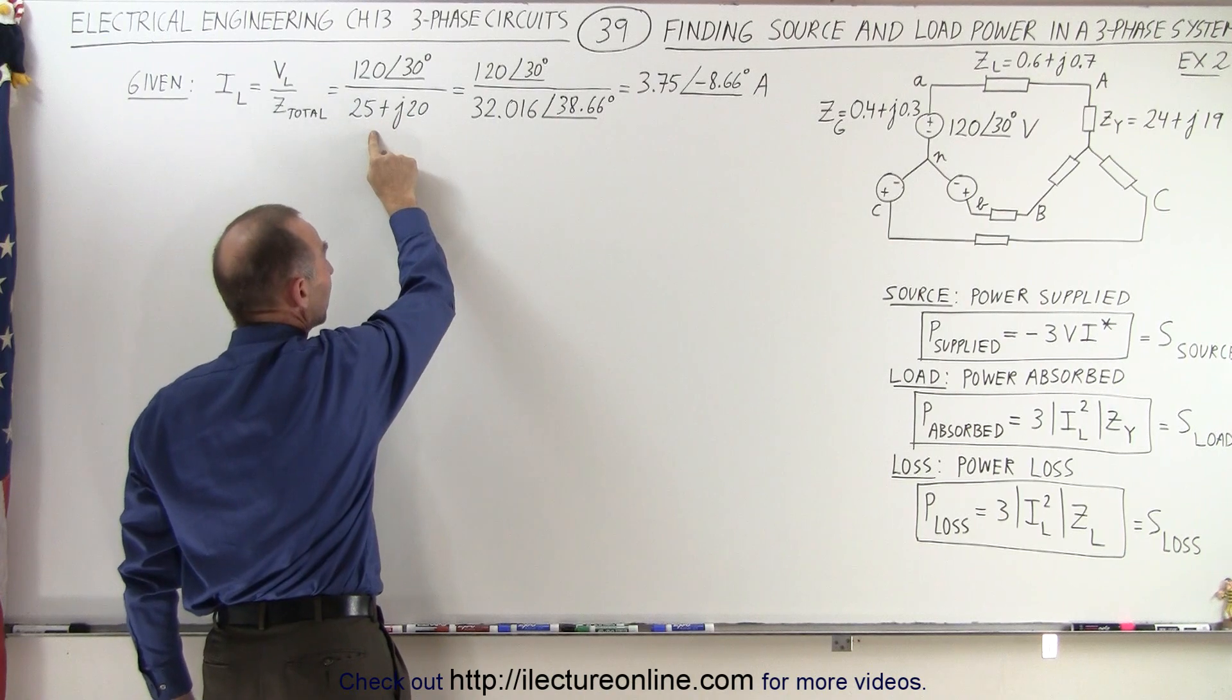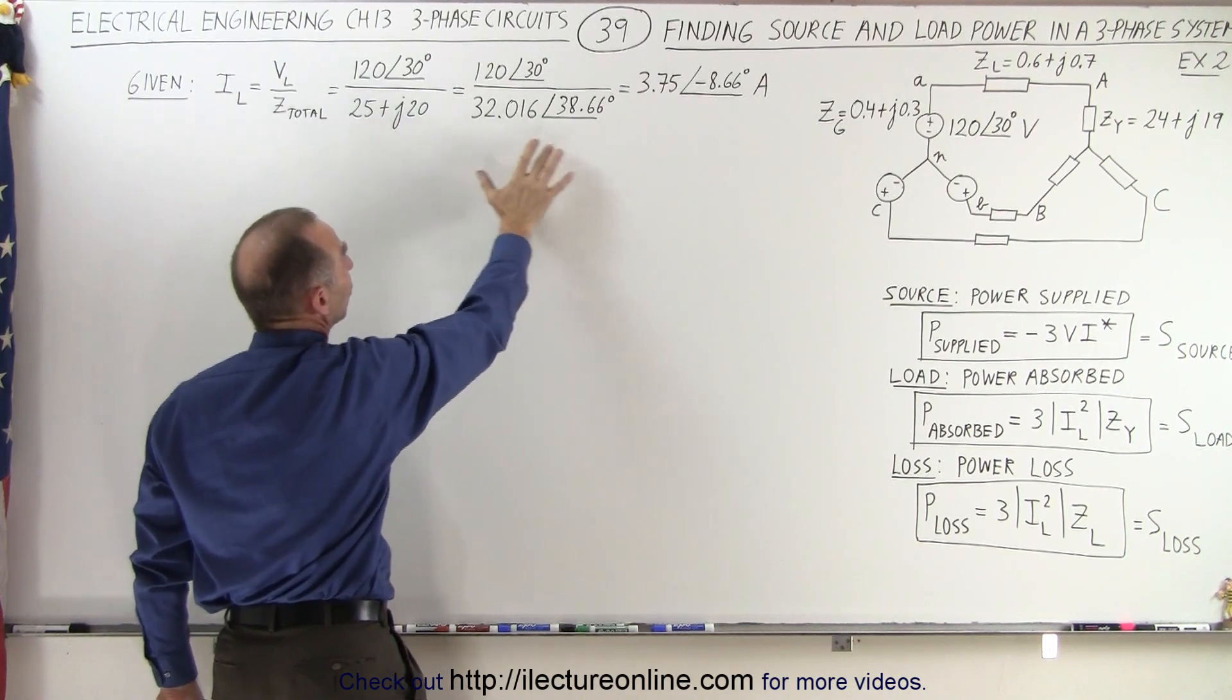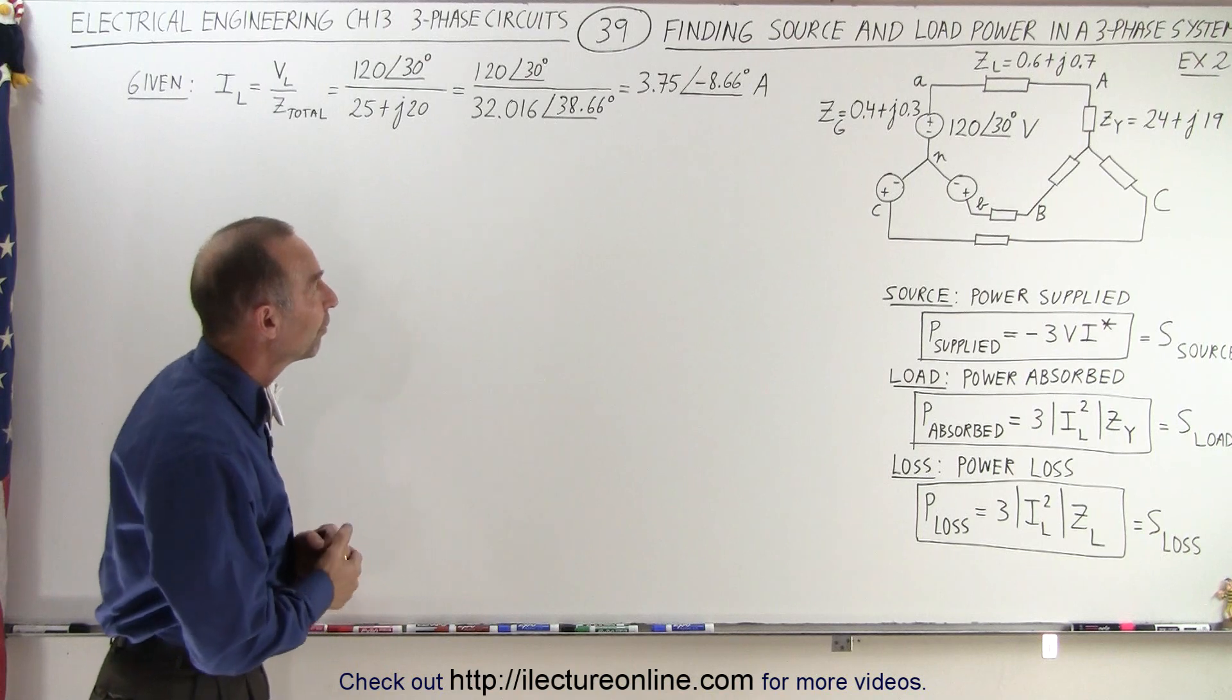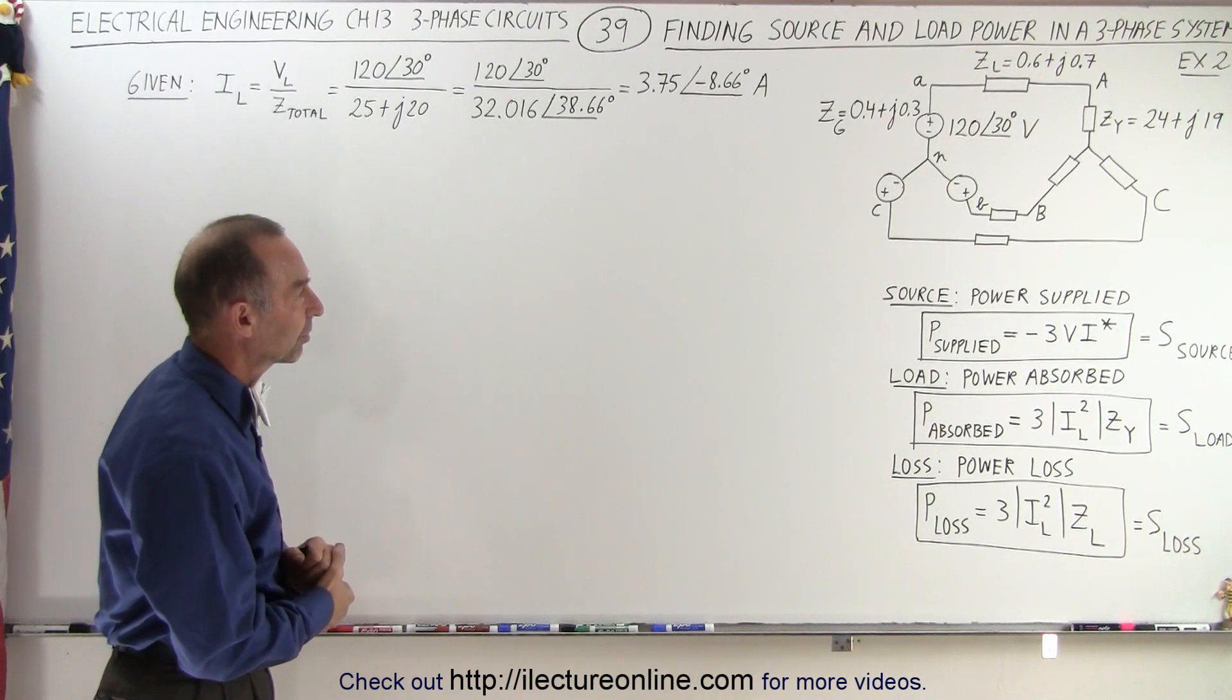So we sum them all up. That's the total impedance of all three sources and notice we have a current of 3.75 amps with a phase angle of minus 8.66 degrees.